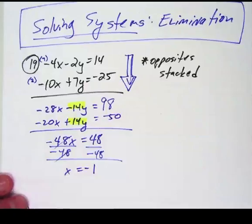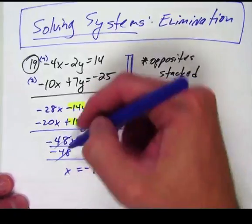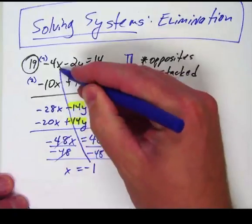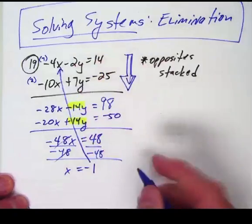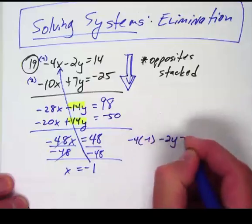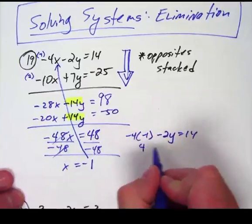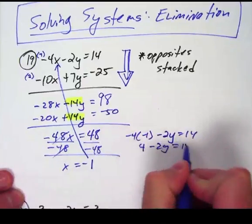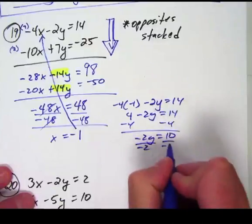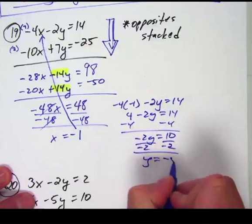Now as soon as I have x being negative 1 then I need to use that and substitute it back into one of these problems. I'll just go ahead and substitute it back in the original right there. And then I've got negative 4 times negative 1 minus 2y equals 14. Negative times a negative is a positive 4 minus 2y equals 14. Subtract 4 on both sides. Negative 2y equals 10. Divide by negative 2. And y equals negative 5.